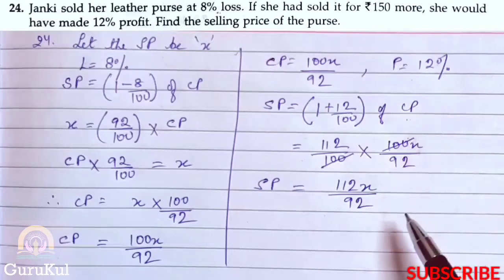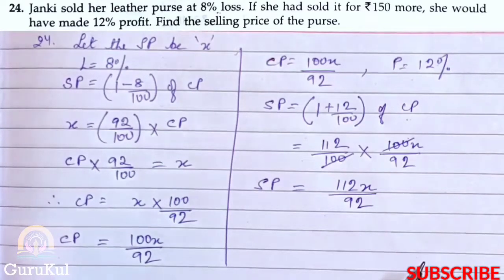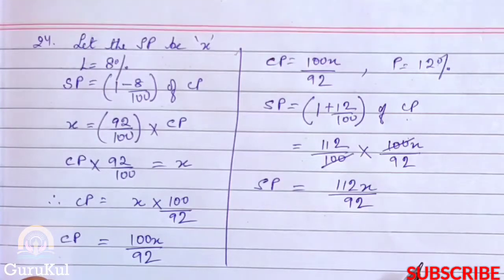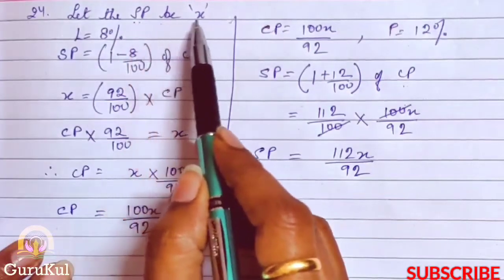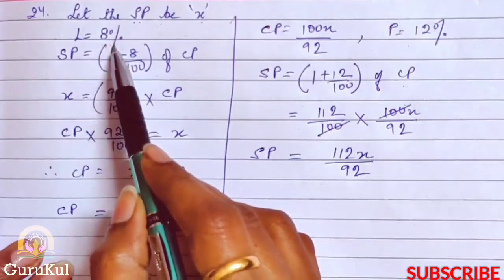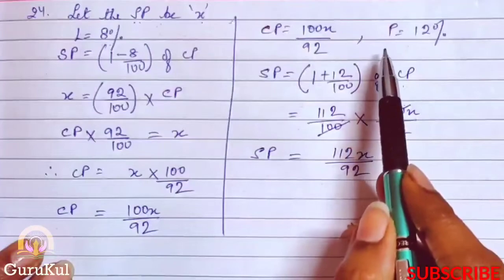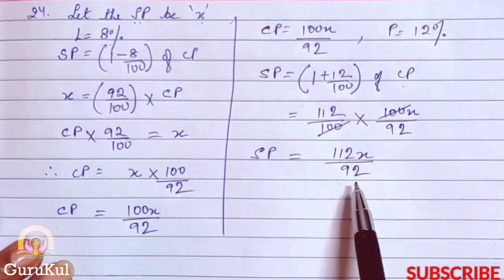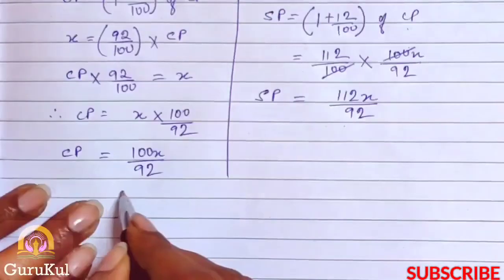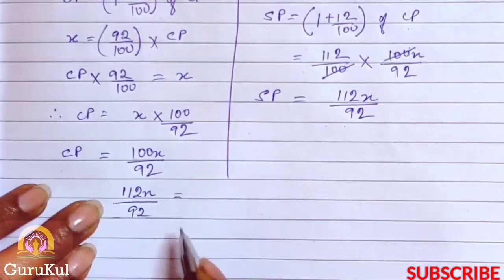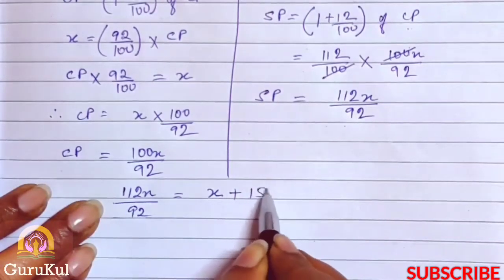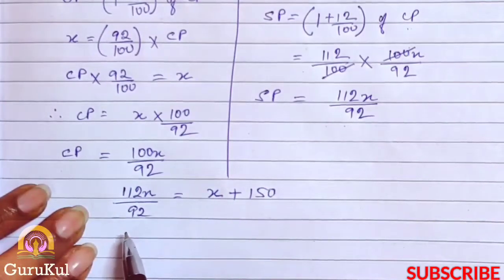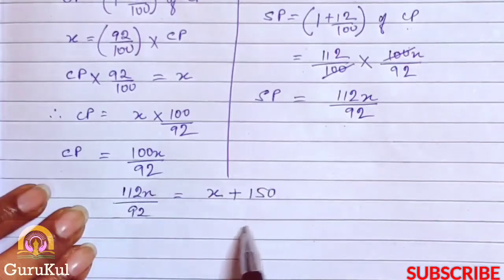The question says if she would have sold it for rupees 150 more, she would have made 12% profit. When selling price was x, Janaki made 8% loss. If she adds 150 to that, she would make 12% profit with that selling price. So our equation is 112x by 92 equals x plus 150.